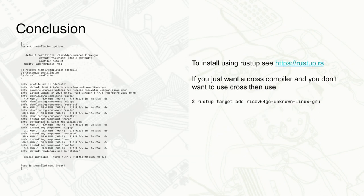On the left we have partial output from Rustup running inside Debian Unstable on a QEMU RISC-V machine, showing installation of the current stable Rust toolchain. On the right we have the Rustup commands needed to install the cross-compiler if you don't want to use Cross, though you likely need the cross-compiler too.